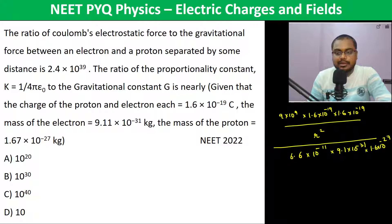r² is gone. This becomes 1.6, 1.6 is gone, 9.1 and 9.9 is almost gone. So 1.6 divided by 6.6.